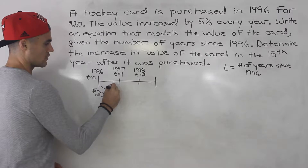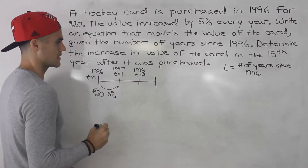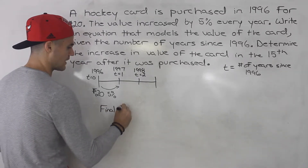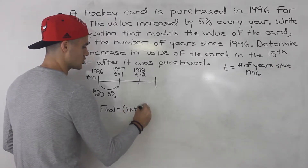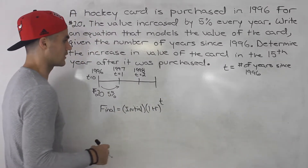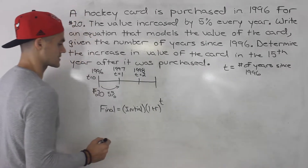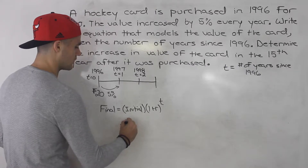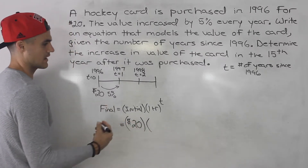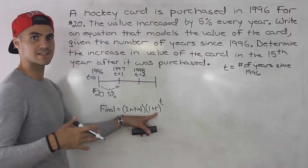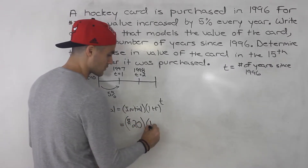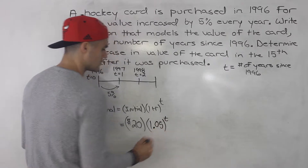We're told the value increases by 5% every year. As a quick review, the final value of something that follows an exponential pattern is the initial value times (1 + R) to the power of t, where t is the number of periods — in this case the number of years since 1996. The R value always has to be in decimals, so 5% becomes 0.05, giving us 1.05 to the power of t.